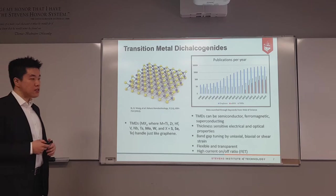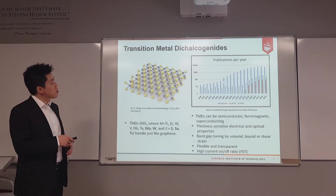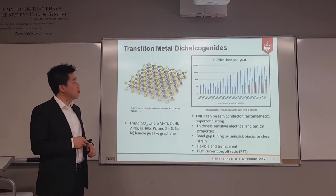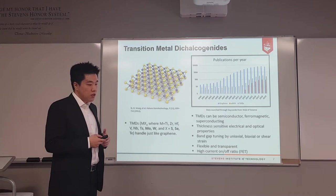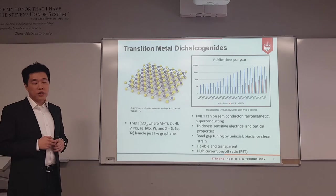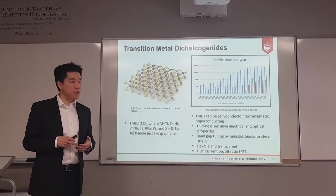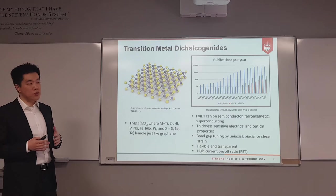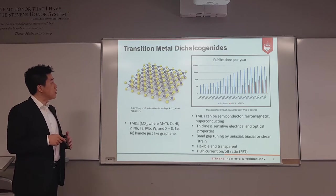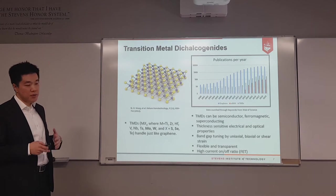Since the first isolation of graphene monolayer in 2004, publications on graphene have dramatically increased — still around 35,000 per year today. However, graphene is a gap-less semi-metal, which eliminates its application in many situations requiring semiconductor materials. So researchers have moved their focus to transition metal dichalcogenides, which are a very promising candidate for semiconductor research.